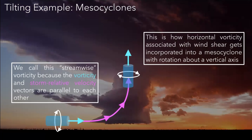Opposite to the crosswise vorticity example, streamwise vorticity occurs when the vorticity and the storm-relative velocity vectors are parallel to each other. You can think of it like the spiral of an American football — if you throw a perfect spiral, the direction of motion is the same as the axis of rotation. That's the hallmark of streamwise vorticity. This is really how mesocyclones acquire their rotation — taking this horizontal spin from the environment and incorporating it into a vertical axis via the tilting mechanism.